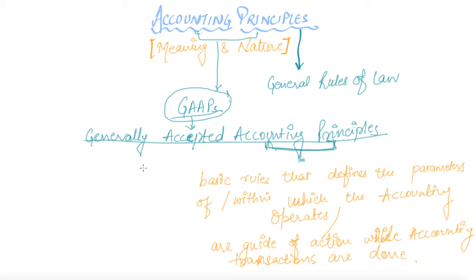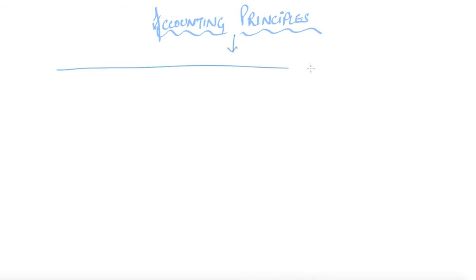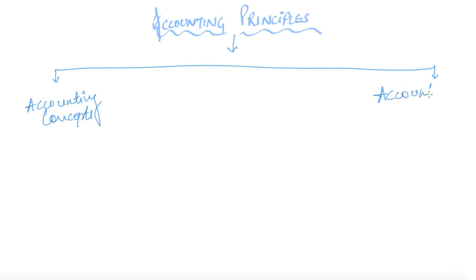Apart from this, if we define it further, we are required to categorize accounting principles into two categories. The first one is accounting concepts and the second one is accounting conventions. Now let's discuss what we mean by each of these.